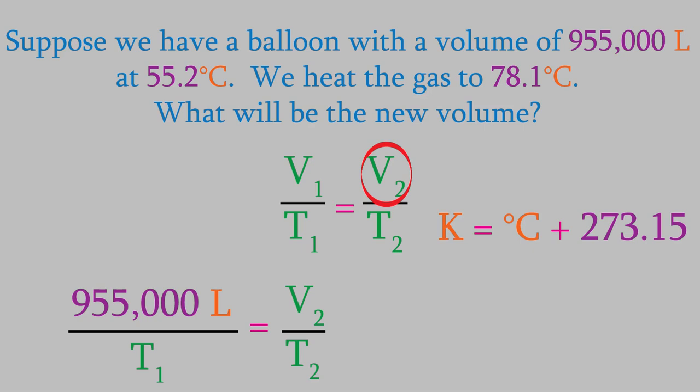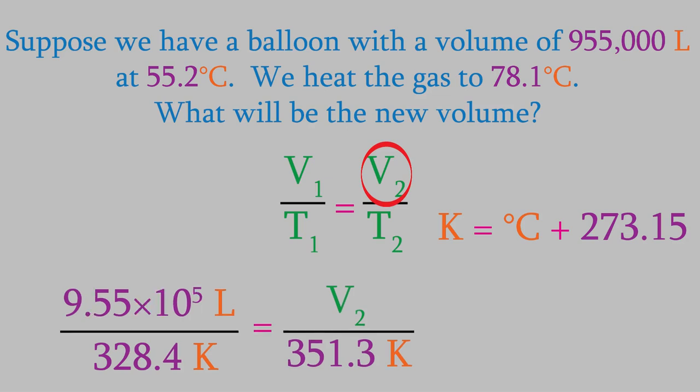So we're starting at 328.4 Kelvin and ending at 351.3 Kelvin. I'll also convert that large volume into scientific notation just to make it a little shorter. When we perform the calculation, we find that V2 is 1.02 times 10 to the sixth liters. So as Charles's Law predicts, the volume went up when we increased the temperature.